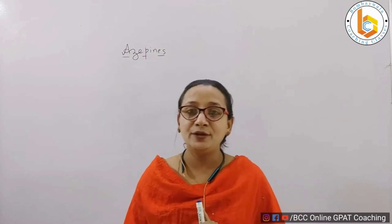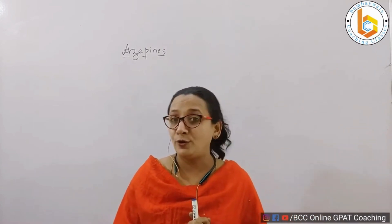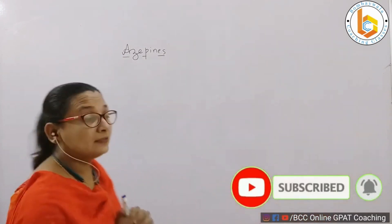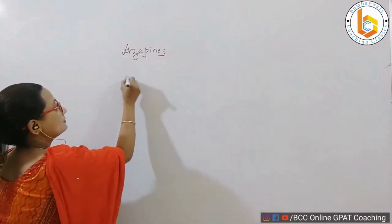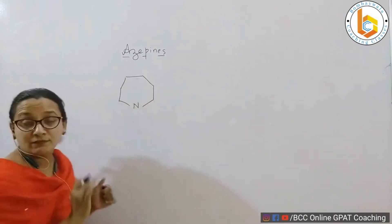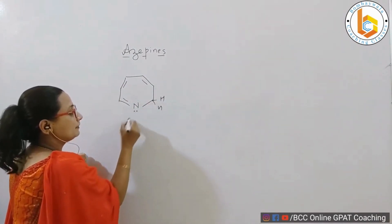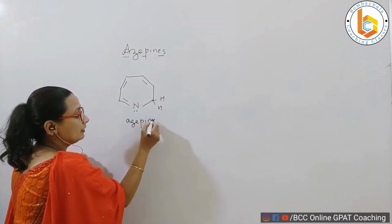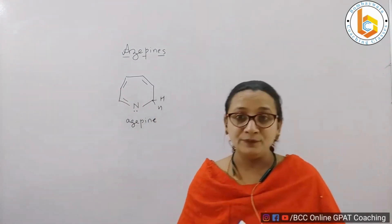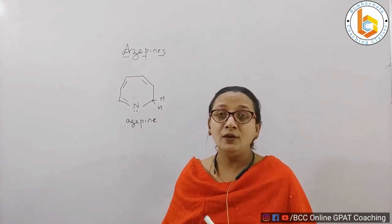Hello, my dear students. This is your guide and mentor from Organic Chemistry, and we are going to introduce ourselves to a new class of heteroaromatic compounds — azepines. Azepines are seven-membered rings containing nitrogen. A structure like this, having three double bonds and obeying Hückel's rule, is called azepine. It is a seven-membered ring containing one nitrogen.